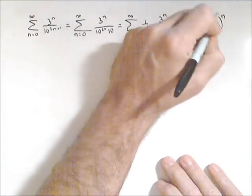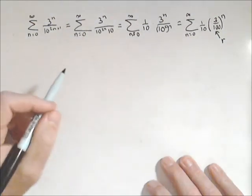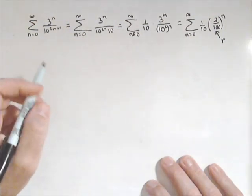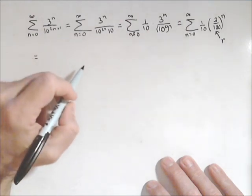I have an exponential which makes this series geometric with a common ratio of 3 over 100, which is less than 1. So the sum is going to be the first term over 1 minus the common ratio.